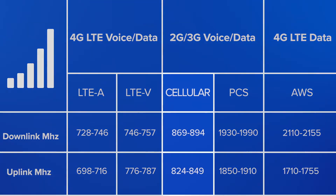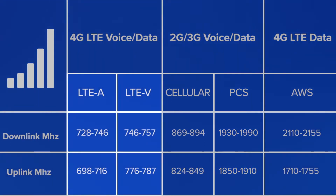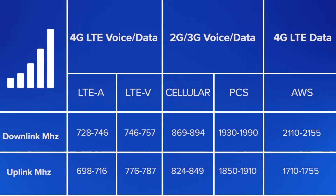Cellular, or 800 MHz, is the most used band for cellular voice and 2G or 3G data, like texts. PCS, or 1900, is also used for this, but to a lesser degree. LTE, or 700 MHz, and AWS, or 2100 MHz bands are usually used for 4G data. Some carriers are doing voice over AWS, which our amplifiers will support as well.